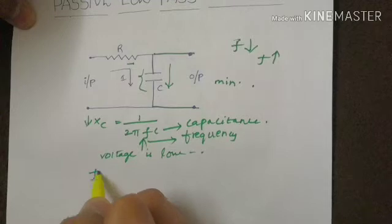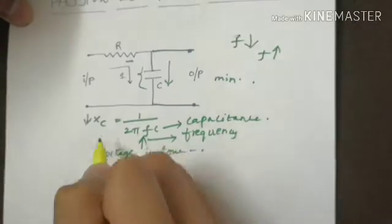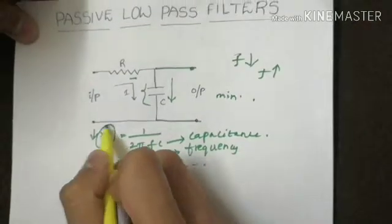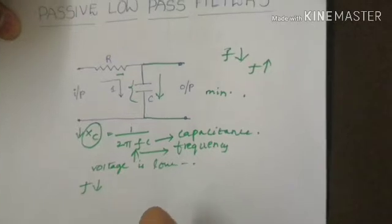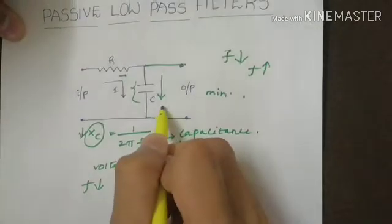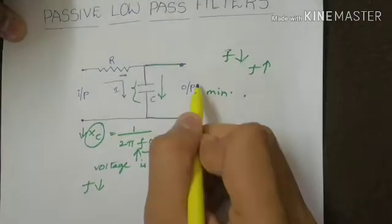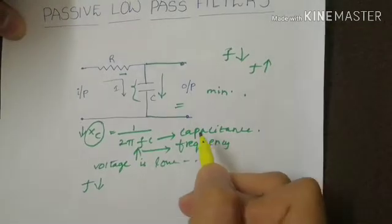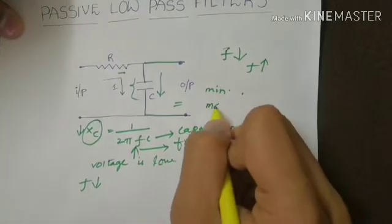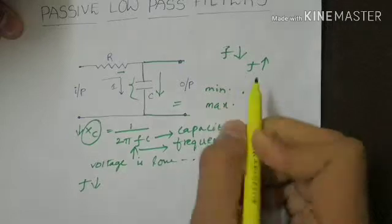When frequency is low, this capacitor reactance will be high and output in this capacitor will also be high. So we can find maximum output across this capacitor.